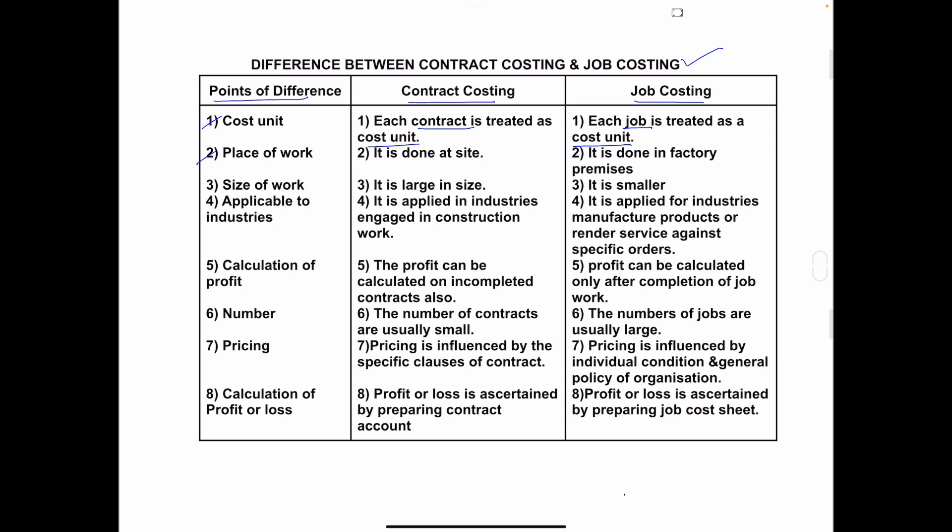Second: Place of Work. In contract costing, the work is done at the construction area or at the site. But in job costing, it is done in the factory premises — the production or manufacturing of products takes place at the factory.